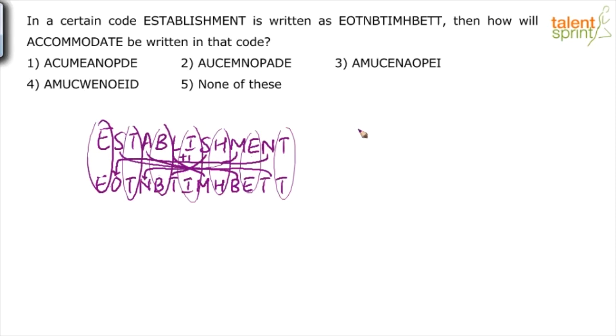So we have to do the same thing for the given word accommodate as well. So A, C, C, O, M, M, O, D, A, T, E. So first of all, from first position, take all the alternate positions and copy as it is. So A remains A, C remains C, M remains M, O remains O, A remains A, and E remains E.